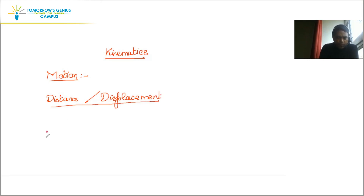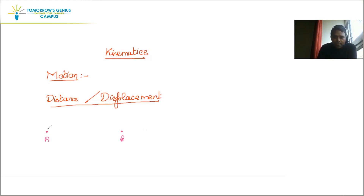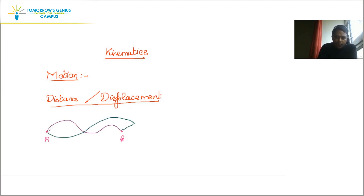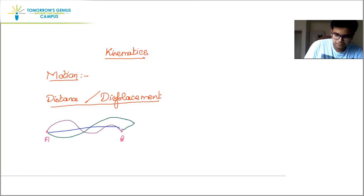Suppose you have an object at point A and it is trying to reach another point B. If it starts from point A and wants to reach point B, there are multiple paths the object can take — it can go one way, take a curved path, or even take a straight line path directly from A to B.